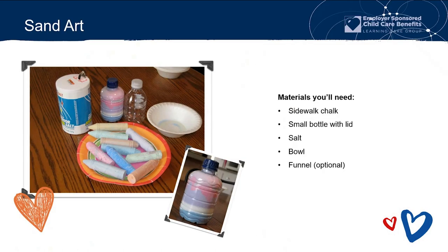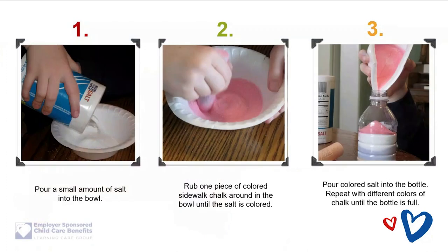Sand art is the first one. Materials you'll need: sidewalk chalk, a small bottle with a lid, some salt, a bowl, and funnels optional. Pour a small amount of salt into the bowl, then rub a piece of colored chalk around in the bowl until the salt is colored. Pour the colored salt into the bottle, creating a colored layer. Repeat with different colors of chalk until the bottle's full and put the cap on. Simple activity from things you probably already have around your house.